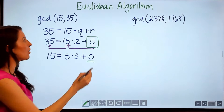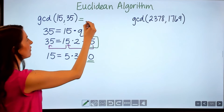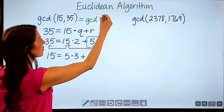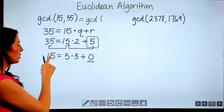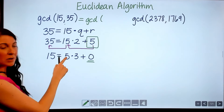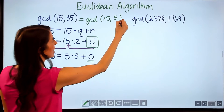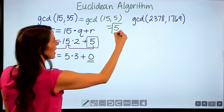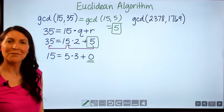Essentially what we've done is rewritten this as the greatest common divisor between two smaller numbers, 15 and 5, and then as we saw, we got an answer of 5.